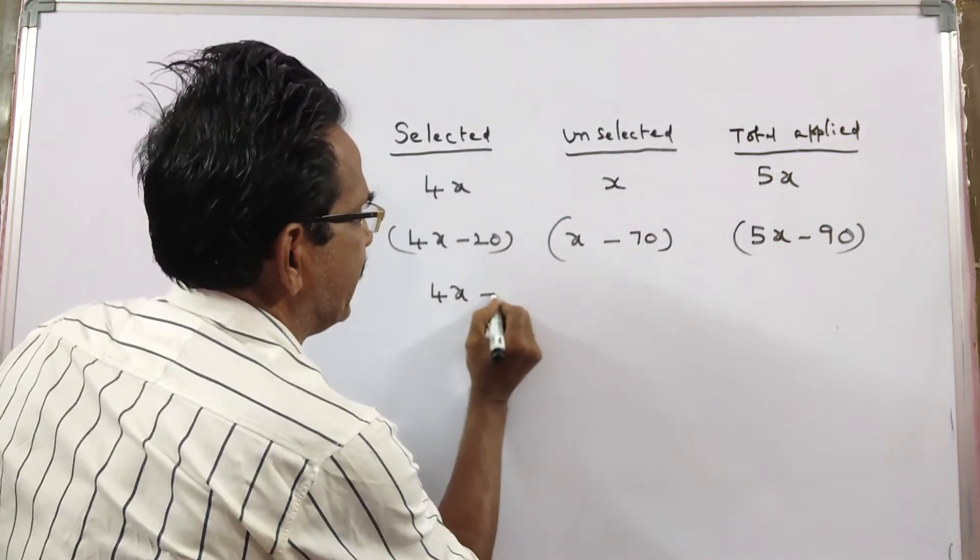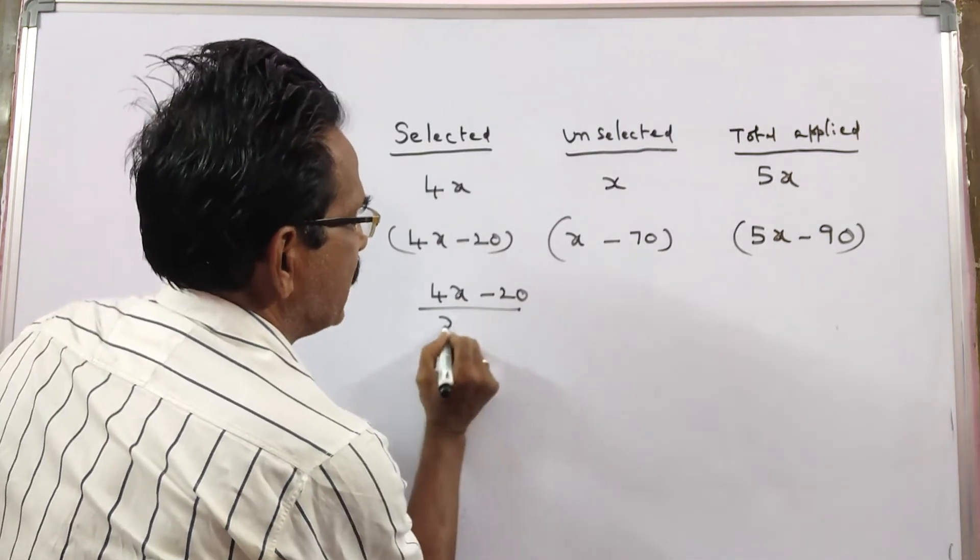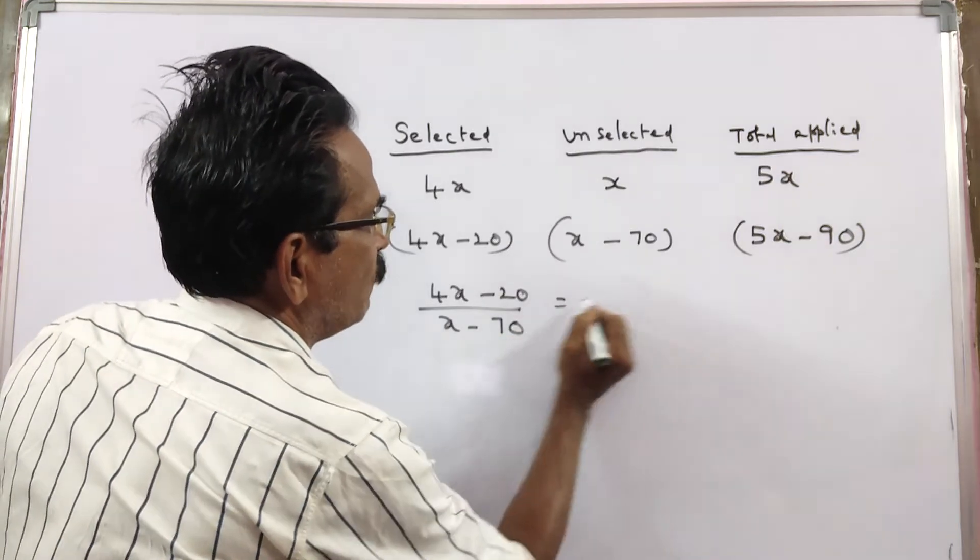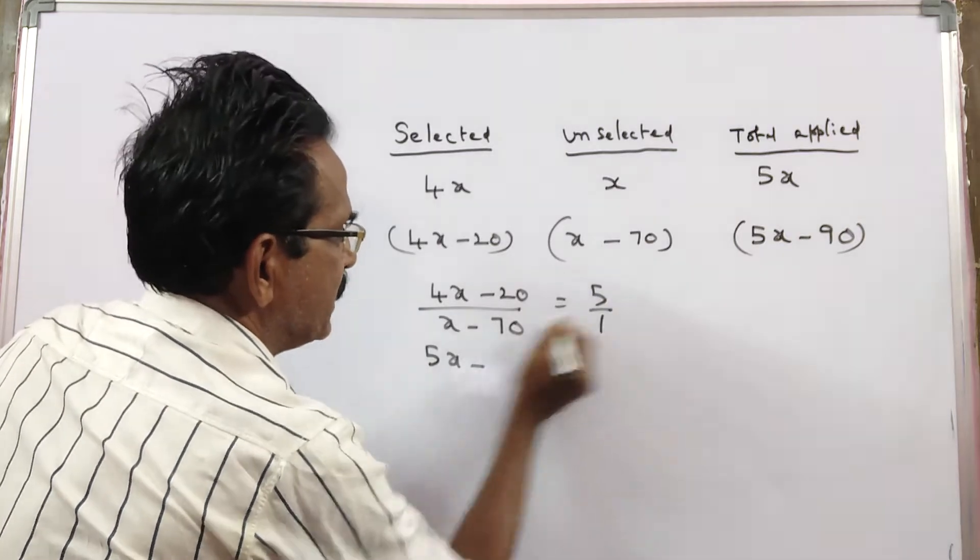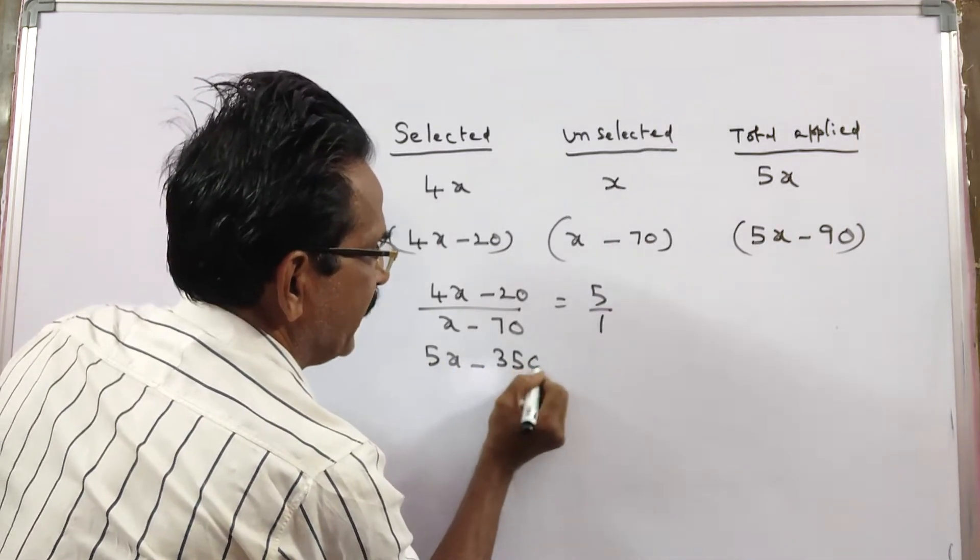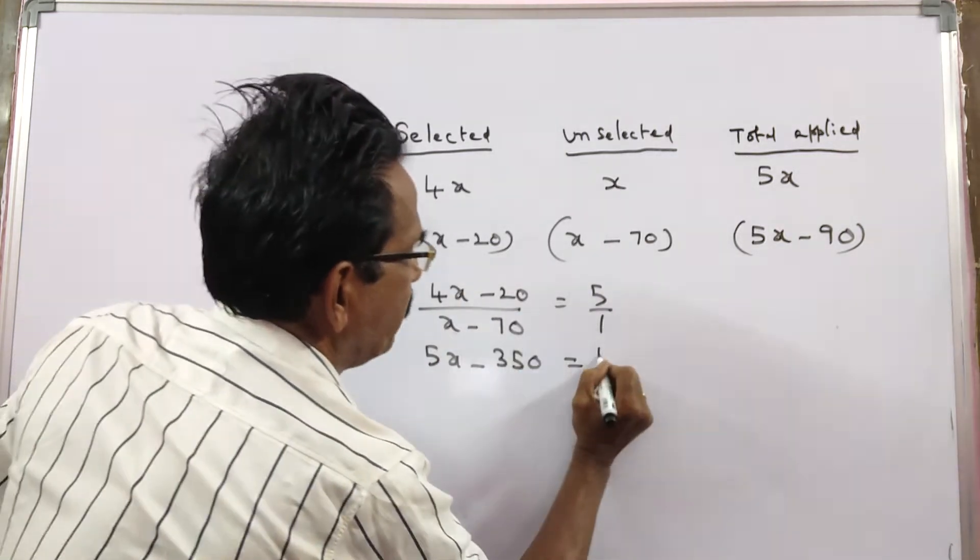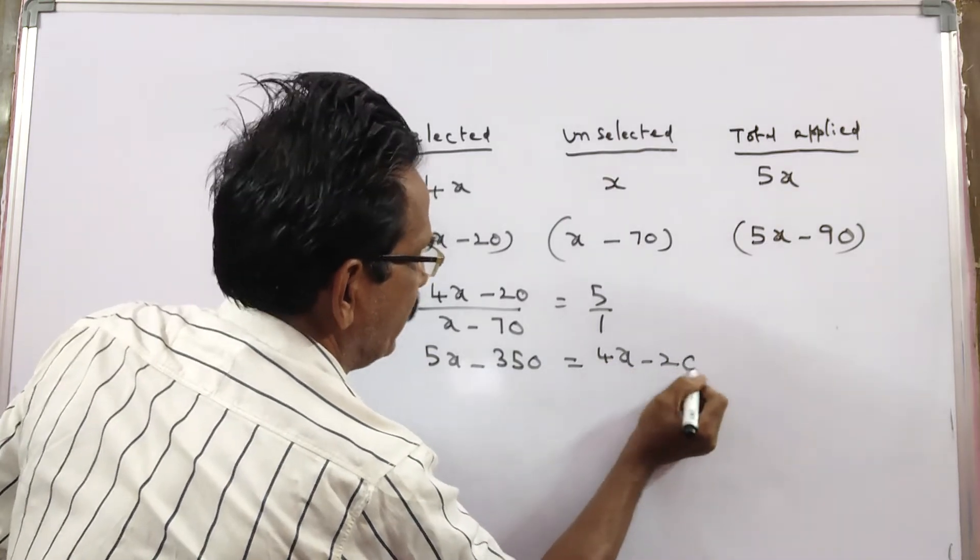So 4x minus 20 by x minus 70 is equal to 5 is to 1. So 5x minus 350 is equal to 4x minus 20.